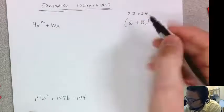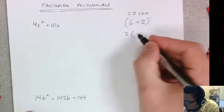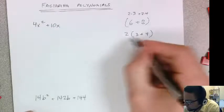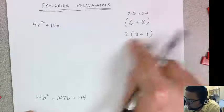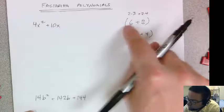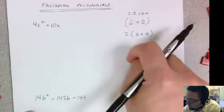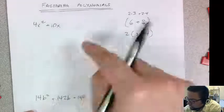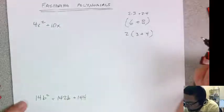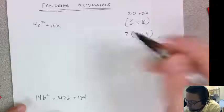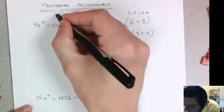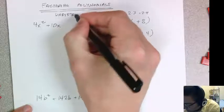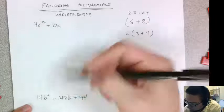So if I took that out and undistribute, put it in front, I could write this as an equivalent expression. That 2 times 3 plus 4, which is 7 times 2 is 14, which is the same thing as 6 plus 8, which is also 14. So what we're going to do is try to break things out as much as we can with these polynomials. And that's what factoring is. Factoring is the same thing as just undistributing.